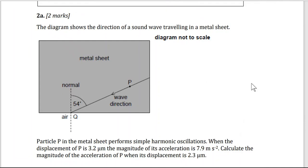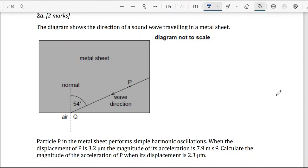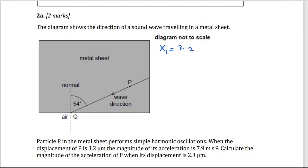Here we have a diagram that shows the direction of a sound wave traveling in a metal sheet. The incident wave is inside the metal, and the angle of incident is 54 degrees. So the question, part of the question, the particle P in the metal sheet performs simple harmonic oscillations. When the displacement of P is 3.2 micrometers, so I have the first displacement, 3.2 micrometers at point P.